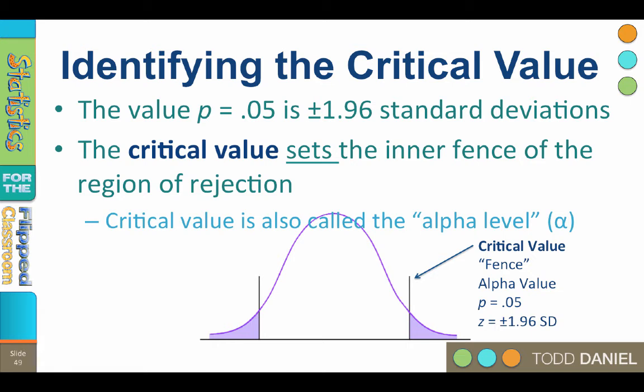The critical value is also called the alpha level, alpha, alpha value, alpha number, level of significance, significance criteria, significance value, cutoff score, or that number that we look up in the table.